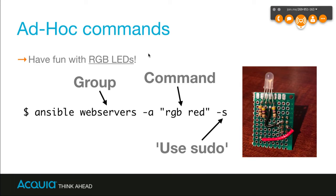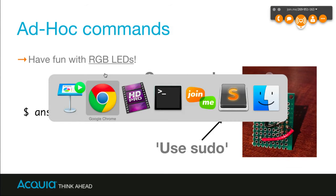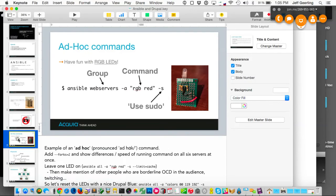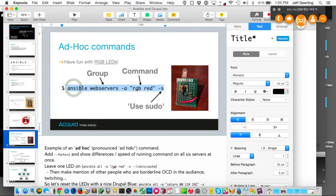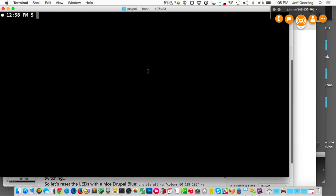I'm going to run a couple of commands to control those LEDs from my Mac using ad hoc commands. Ad hoc is just Ansible throwing a command at the server through the SSH connection. On this setup there's a load balancer on top, four web servers running Drupal 8, and a database server. I'm going to run this on the web servers. You have the Ansible command, then you give it a group — or you can say 'all' for all of them — and then you give it an argument.